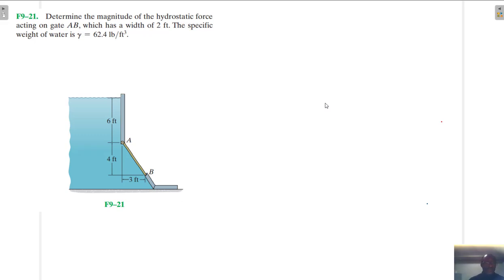Hello, I welcome you all to this another interesting screencast. We're going to be solving this engineering mechanics problem. It reads: determine the magnitude of the hydrostatic force acting on the gate AB which has a width of 2 feet. The specific weight of water is gamma equals 62.4 pounds per cubic feet.